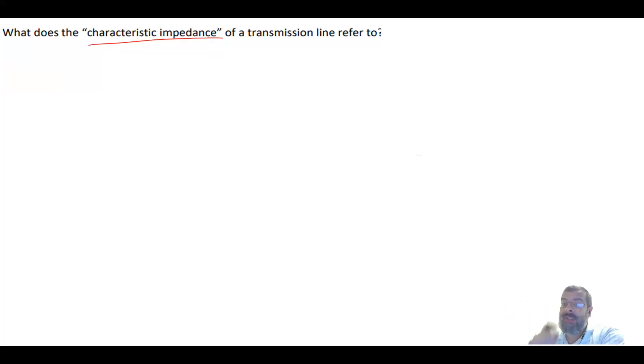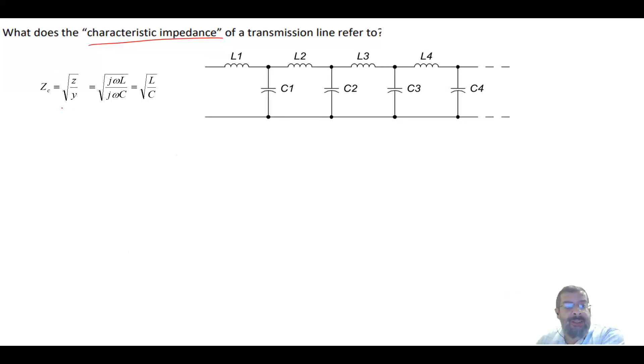The formula for that, Zc equals the division of Z, which is the line impedance, divided by Y, which is the shunt impedance. When we ignore R, Z equals R plus j omega L, so when ignore R it becomes j omega L, and Y which is admittance equals j omega C. Then this will be cancelled, so it's root L over C, and this is the line that we are using here.